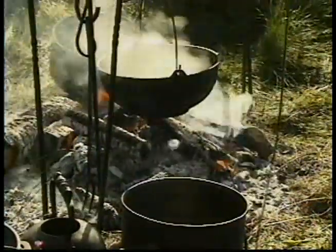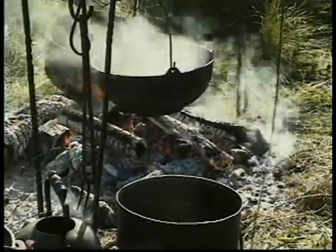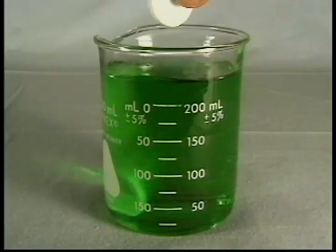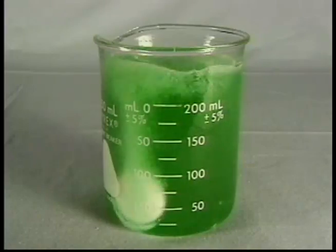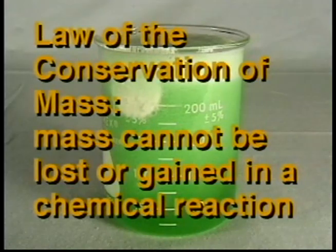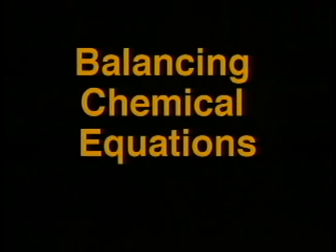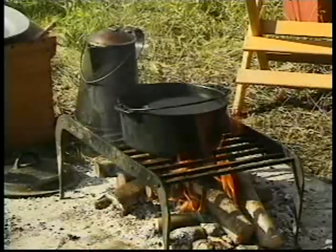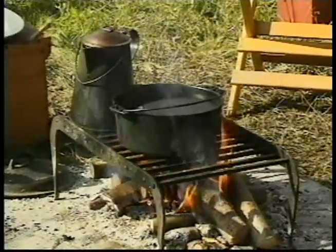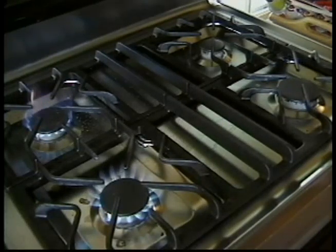In chemical reactions, the overall mass of the substances reacting does not increase or decrease. The changes that occur in a reaction involve the rearrangement of atoms, not the destruction or production of matter. This is expressed in the law of conservation of mass, which states that mass cannot be lost or gained in a chemical reaction. Expressed in another way, the number of atoms of each element must be the same before and after the reaction.